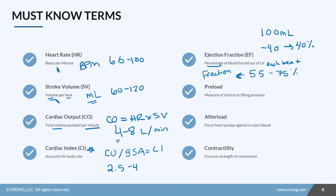Preload is the measure of stretch or filling pressure within the heart — the more it's stretched during diastole, the higher the preload. Think 'pre' equals before: it's the blood before the heart as it comes in and fills it up. Afterload is the force the heart pumps against in order to eject blood — it has to overcome that pressure to get the valves open. Think 'afterload' equals against. Contractility is the force or strength of the ventricular contraction.